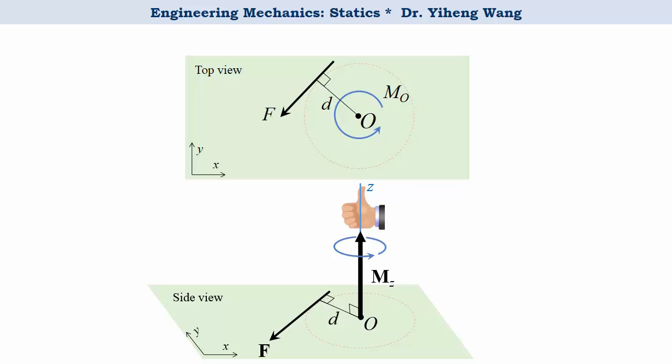In the 2D plane, the moment vector cannot be visualized, but you can imagine it to be the head of an arrow shooting out of the plane represented by a dot. The rotational effect is counterclockwise, and the magnitude of the moment is positive.